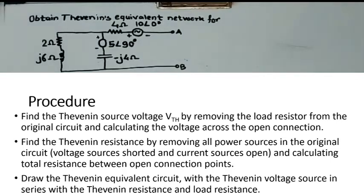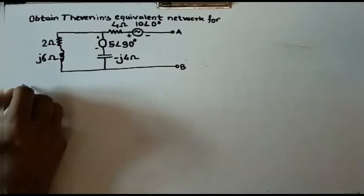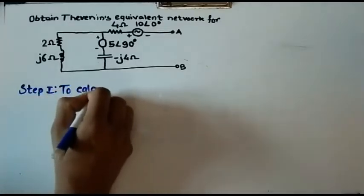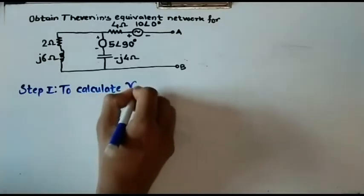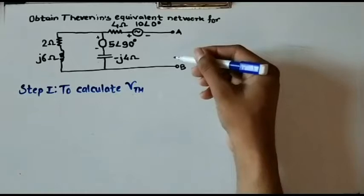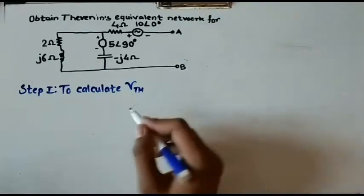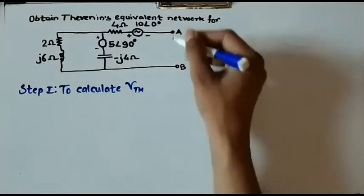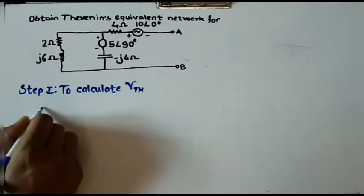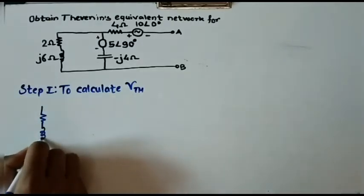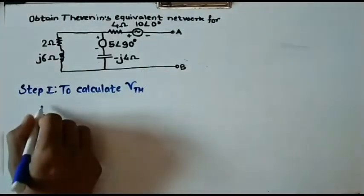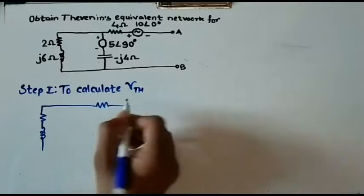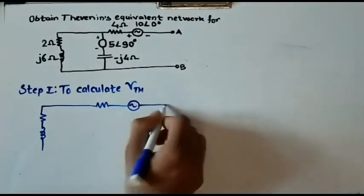Now let us solve the example. Step one is the calculation of VTH. VTH is nothing but the Thevenin's equivalent voltage source. We have to convert this circuit so we can calculate VTH. The condition for calculation of VTH is to remove the load resistance. In this case, no load resistance is given — it is a simple example where we have to obtain the Thevenin's equivalent network between these terminals. So we have to calculate VTH between these two terminals.